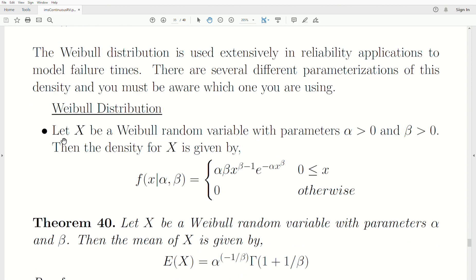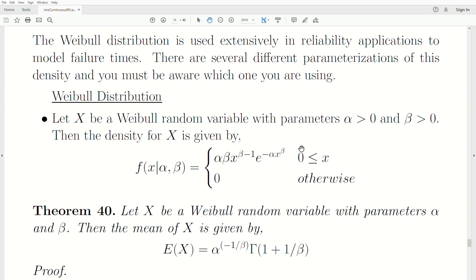Let X be a Weibull distribution random variable with parameters alpha and beta, then the density for X is given by this expression: alpha beta X to the beta minus 1, e to the negative alpha X to the beta, X is greater than or equal to 0.